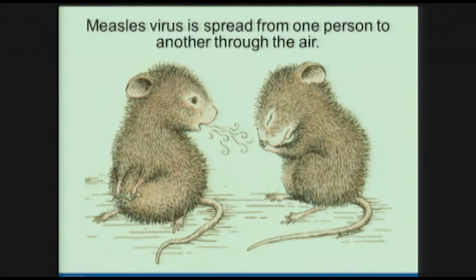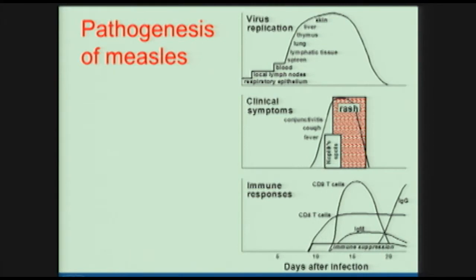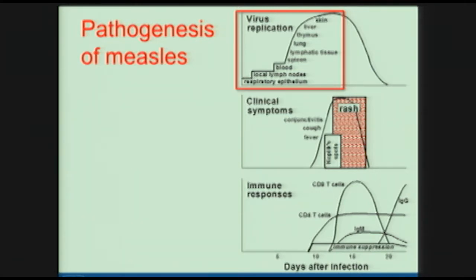The virus is spread by the respiratory route — you inhale a virus that's either suspended in air or is in droplets that have been sneezed or coughed out. Virus replication starts in the respiratory tract but then spreads systemically, primarily to lymphoid tissue but also to the skin — because you eventually have a rash — to liver, etc. So it's a very widespread infection. During that period of time, the infection is essentially asymptomatic. The virus is spreading rapidly throughout the body, but the person doesn't start feeling sick until later.